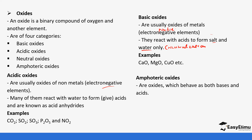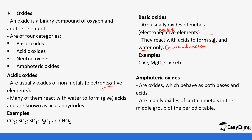We also have amphoteric oxides, which behave both as bases and acids. This means they can react with both acids and bases. They are initially formed from metals in the middle group of the periodic table. The ones we have are aluminum, zinc, and lead. You'll notice their uniqueness especially when we come to qualitative analysis in our next lesson, as they have unique properties compared to other metal ions.